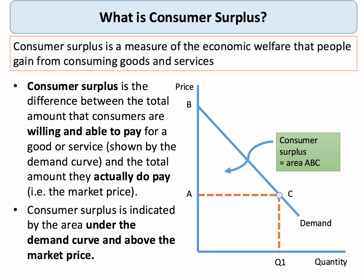So let's see how this works. If the market price is A, the area underneath the demand curve is area ABC, and that's the area of consumer surplus.